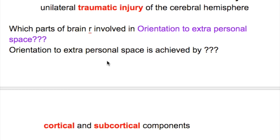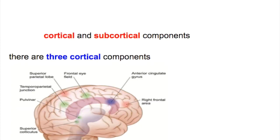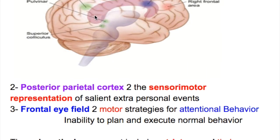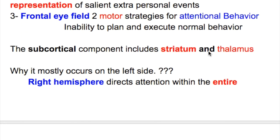Which parts of the brain are involved in orientation to extra-personal space? Orientation to extra-personal space is achieved by cortical and subcortical components. There are three cortical components: the cingulate cortex, which provides access to the limbic motivational mapping of extra-personal space; the posterior parietal cortex, for sensory-motor representation of salient extra-personal events; and the frontal eye field, for motor strategies for attentional behavior and planning. The subcortical components include the striatum and thalamus.